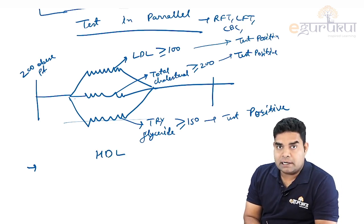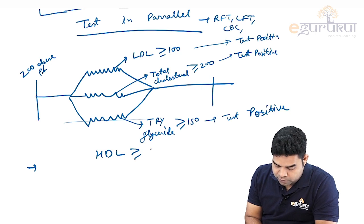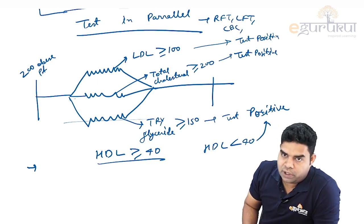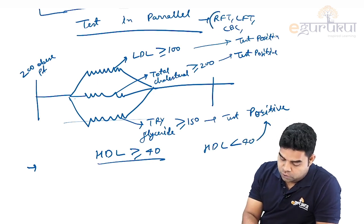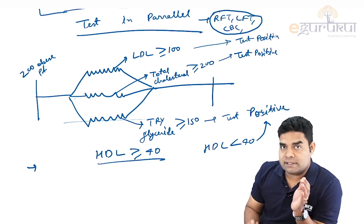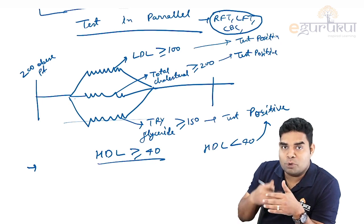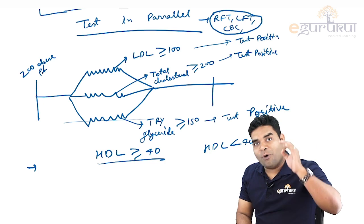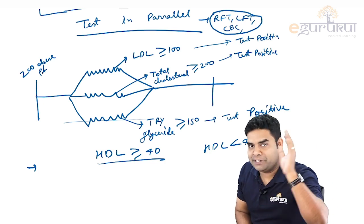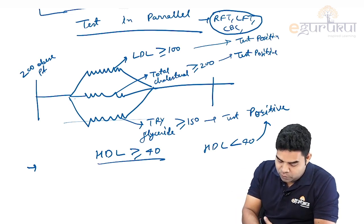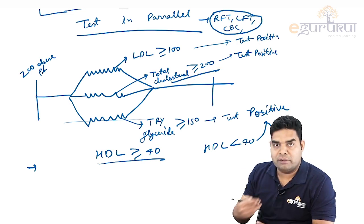There is one more criteria: HDL should be more than or equal to 40, because if HDL is less than 40, then again the test is positive. Just like that we also do RFT, LFT, CBC—all these tests we do in parallel. In fact, the reason why most of the tests which doctors prescribe are in parallel is because we want to find some illness in the patient.